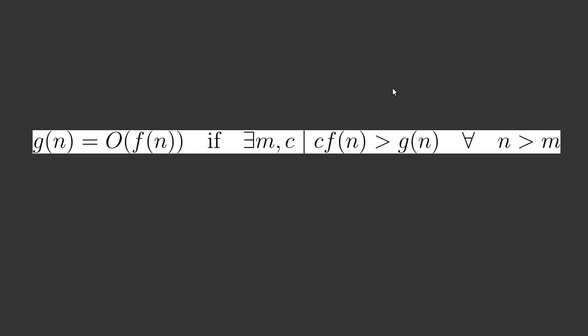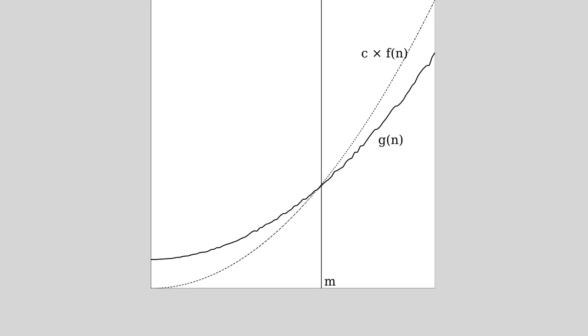It probably helps to look at this pictorially. So here's a possible plot. The solid line is kind of a measure of how much work the algorithm actually did. Note it doesn't have to be smooth - things can jump around a little bit depending upon the inputs. But it kind of has a general trend to it. c times f of n is a smoother function, the dotted line here. In this case I happen to pick a quadratic function - you can probably tell that this is a parabola there.